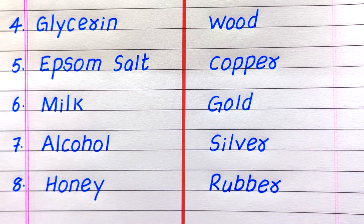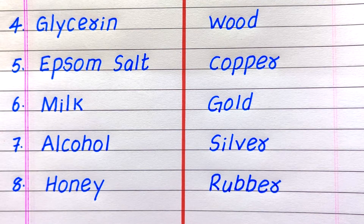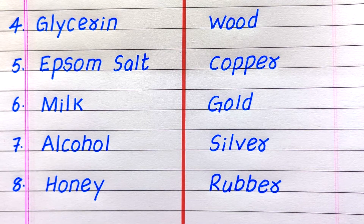Fourth example of a soluble substance is glycerin, fifth Epsom salt, sixth milk, seventh alcohol, eighth honey.